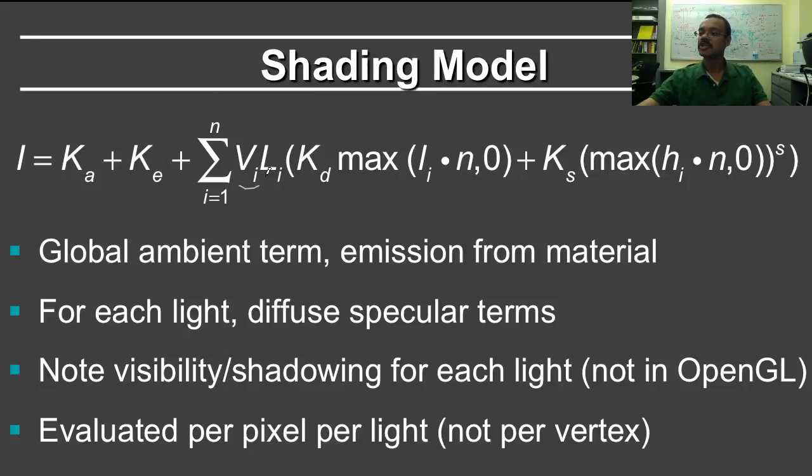This is different from OpenGL, which did not have you evaluate the visibility, but in the context of a ray tracer, it's easy to just shoot a shadow ray. If the shadow ray returns that the light is blocked, then you don't consider that light at all. Li is the intensity of the light. Of course, it's different for each color channel.